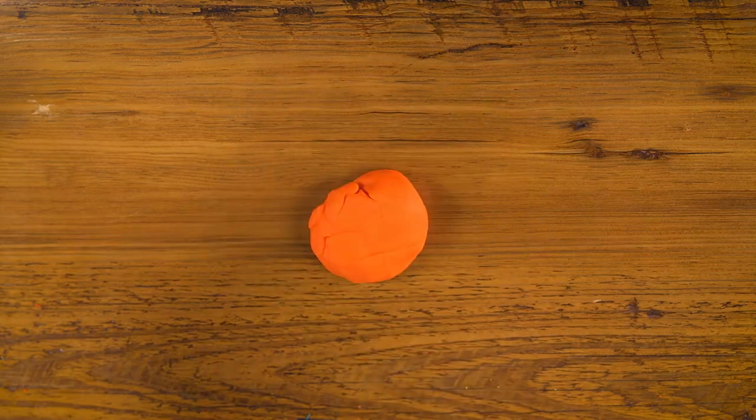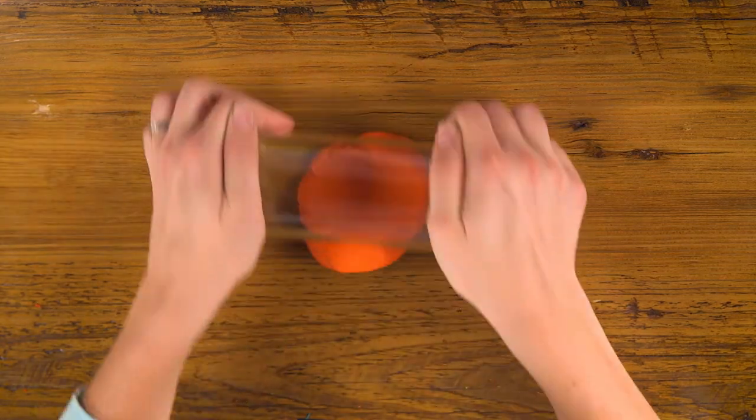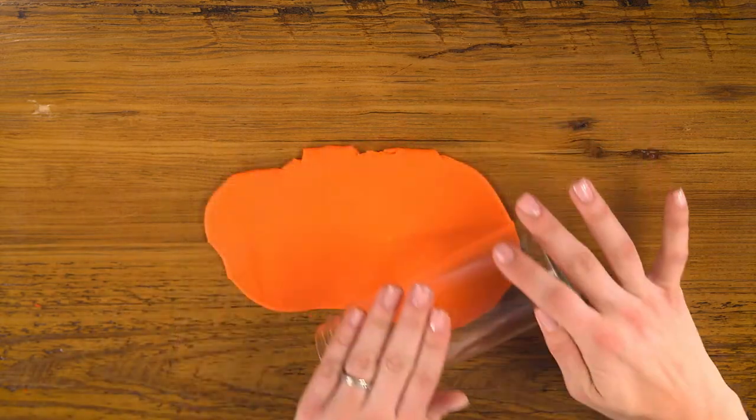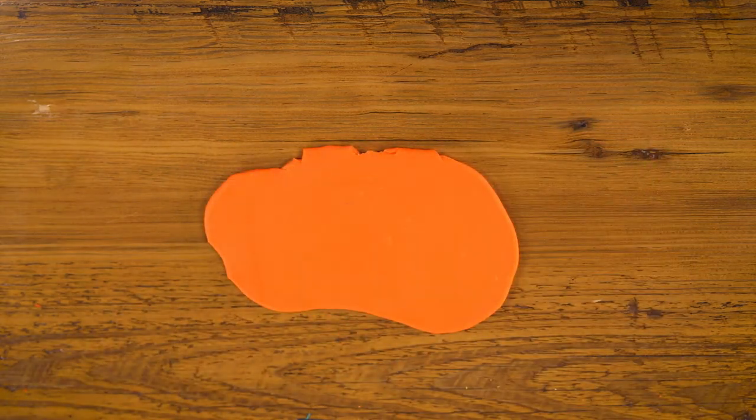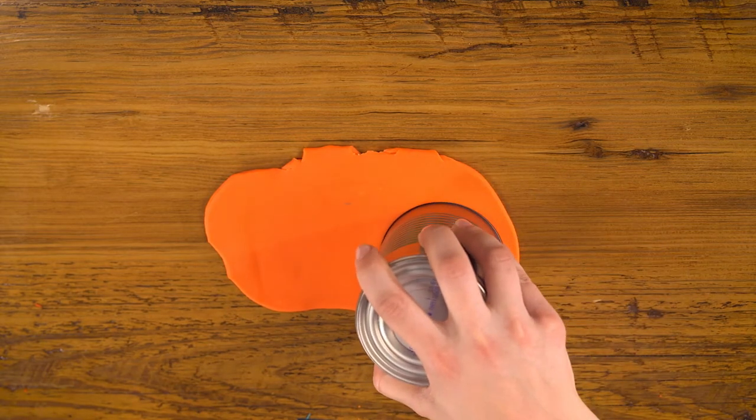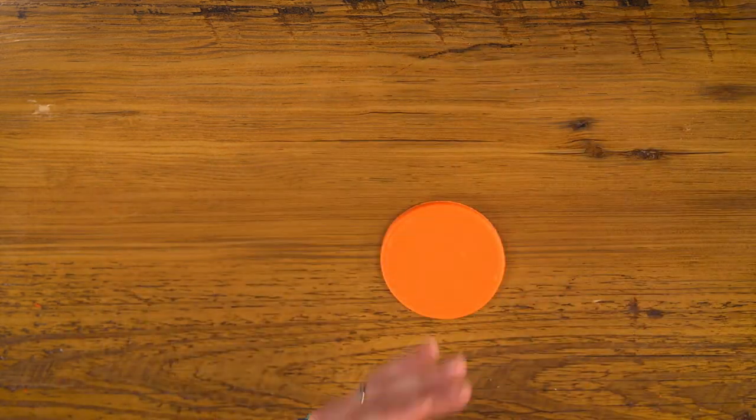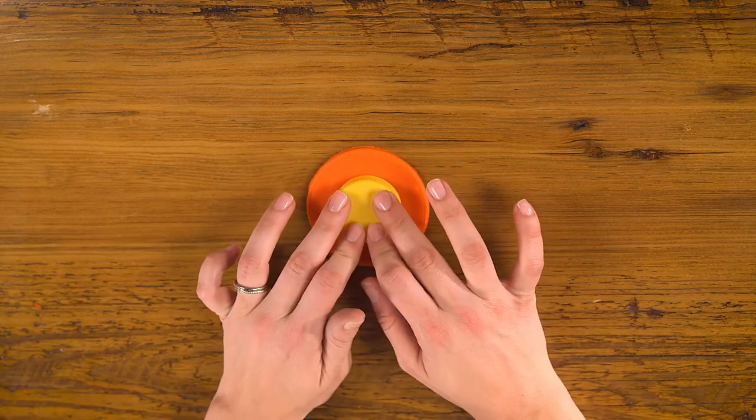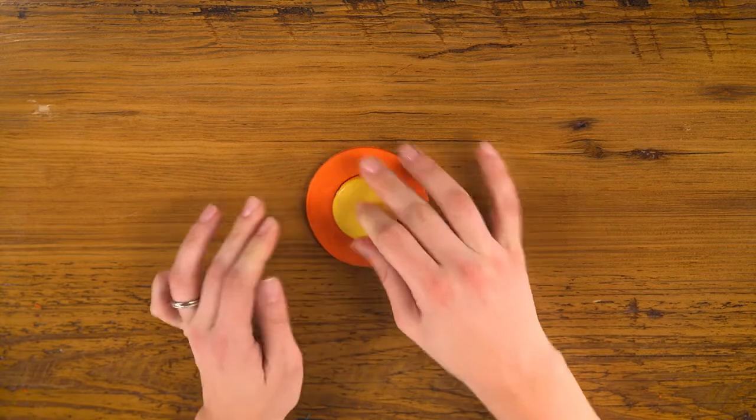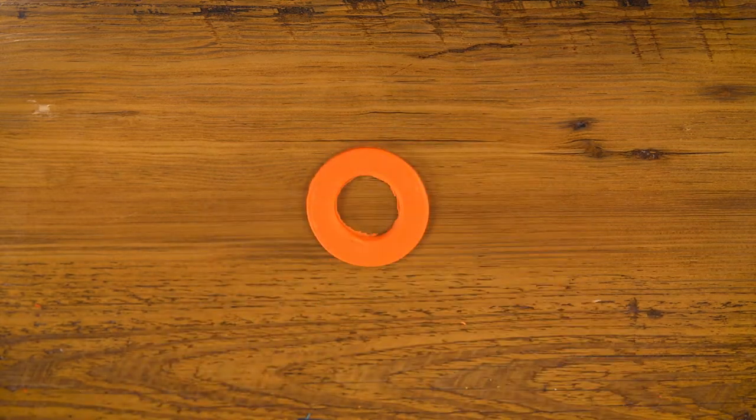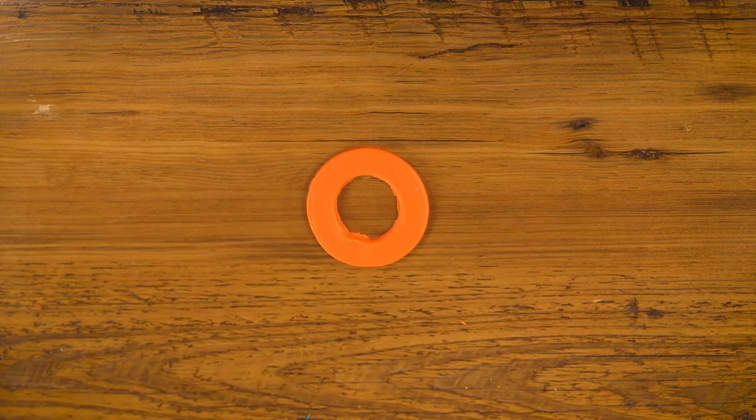To make our O, I'll use orange and I'll roll it into the biggest pancake yet. I'll use my largest can to cut out a circle. Then I'll use my bottle cap to cut out the center. There's my O.